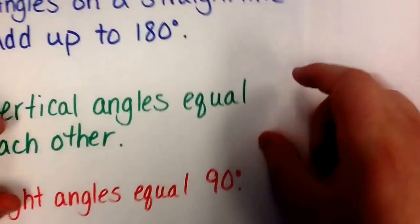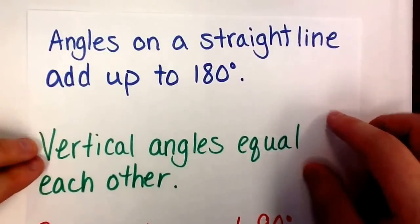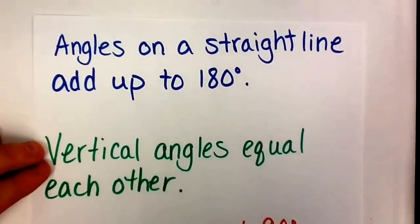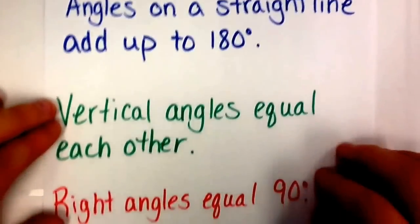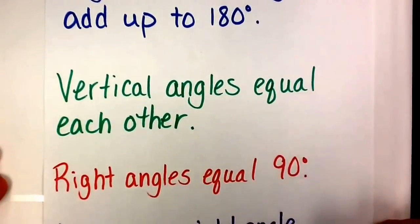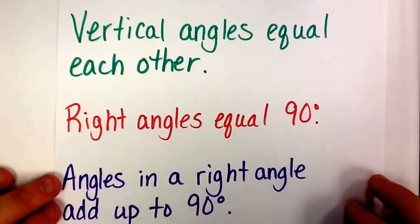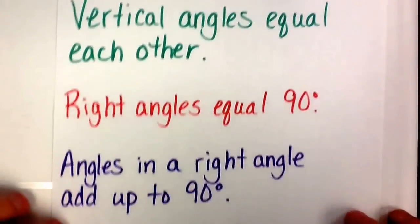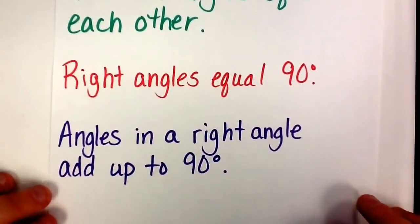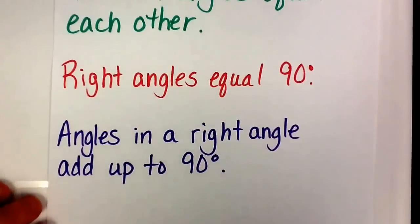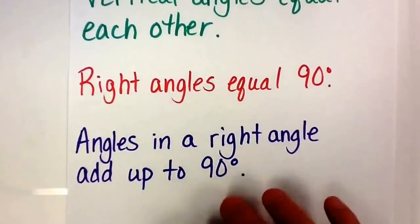Before we begin, I want to point out a couple things. These things always hold true — you need to remember these. Angles on a straight line add up to 180 degrees. Vertical angles equal each other. Right angles equal 90 degrees. And angles in a right angle add up to 90 degrees. I'm going to refer back to these as we're doing our homework tonight.